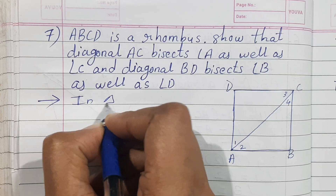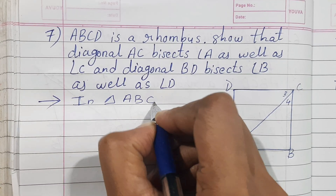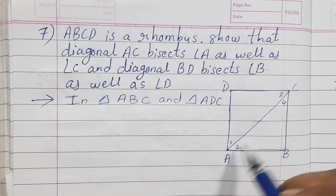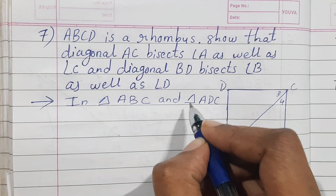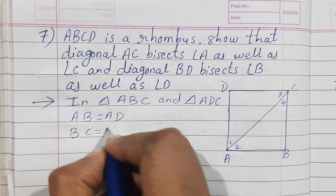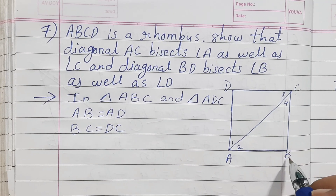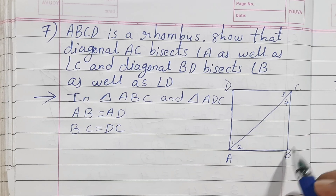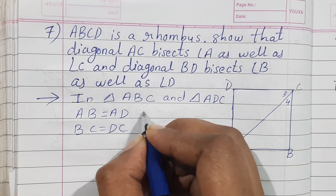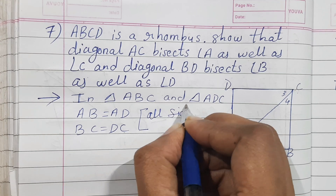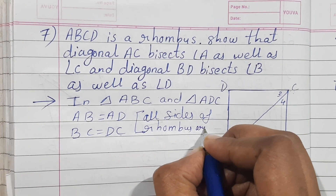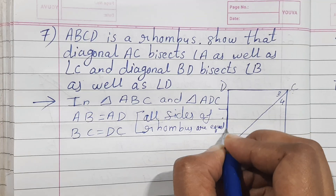Take in triangle ABC and triangle ADC. I have taken these two triangles. From this, you can write down AB is equal to AD and BC is equal to DC — because all sides of a rhombus are equal.